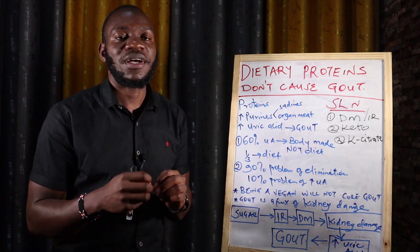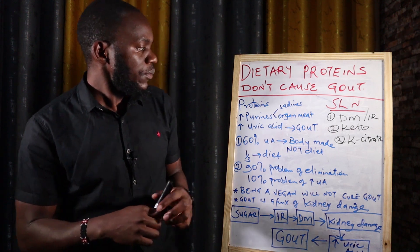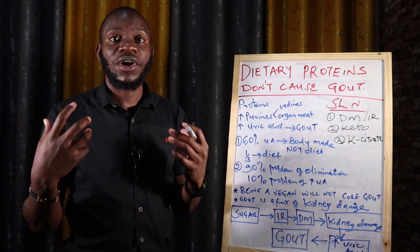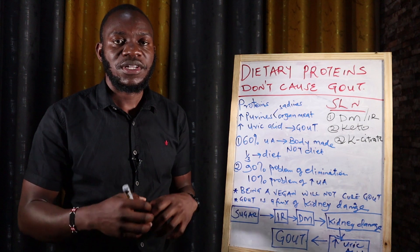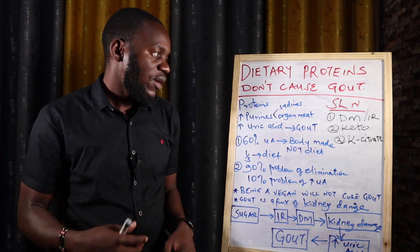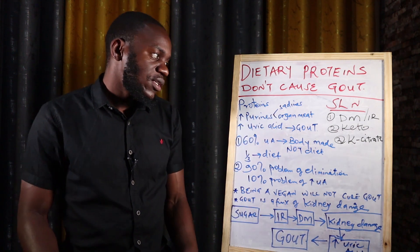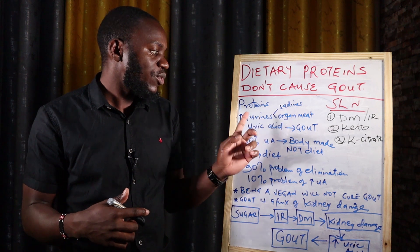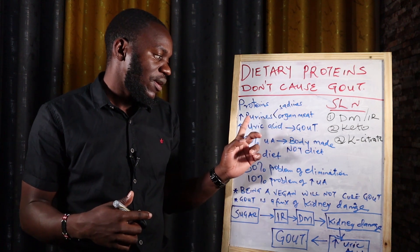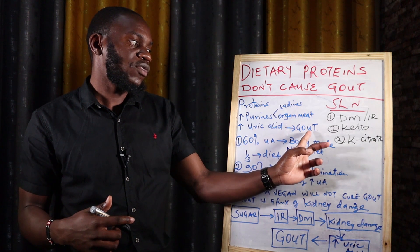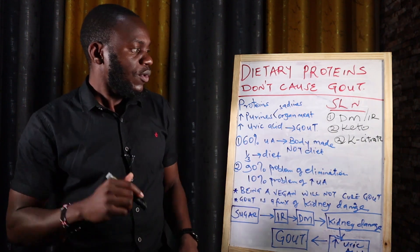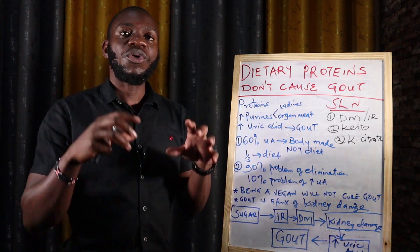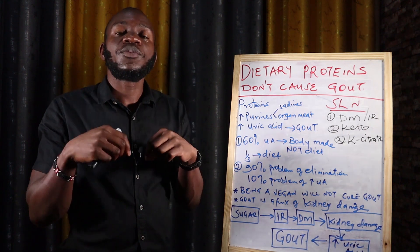Purines are high in seafoods, organ meat, and even chicken and turkey — those are your main dietary sources of purines. Once you consume these foods, the purines are broken down to produce uric acid, which increases in your blood and precipitates to form gout in your joints. Now, 60% of uric acid is formed by your own body — it is endogenous.